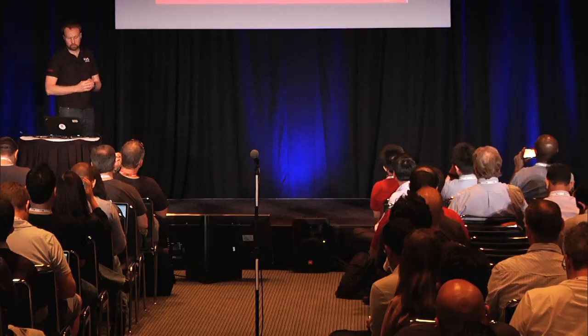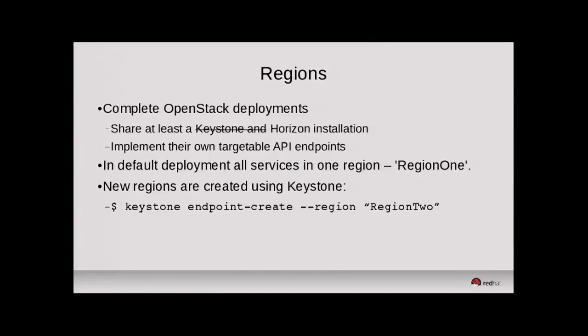First, I'll talk about regions and cells. Each region in an OpenStack cloud, if you're using this functionality, has basically a complete deployment of each OpenStack component. They share at least a Horizon installation. I have Keystone crossed out because until recently, a region also always shared a Keystone deployment. There's now an available regions option in Horizon that allows you to authenticate with multiple Keystone instances in different regions.